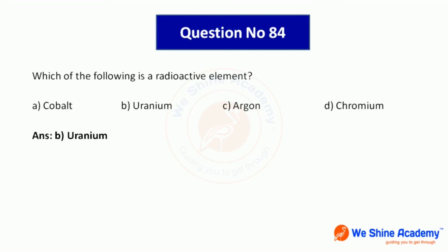Question number 84: Which of the following is a radioactive element? Options include cobalt, uranium, argon, chromium. Uranium is a radioactive element. Answer option B, uranium.